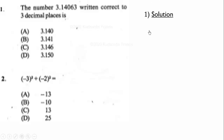Our first question: the number 3.14063 written correct to three decimal places. So the given number is 3.14063. To correct to three decimal places, we start counting from the first number after the decimal point: one, two, three. Because the next number is 6, which is greater than or equal to five, we round up to get 3.141. So the correct answer is B.